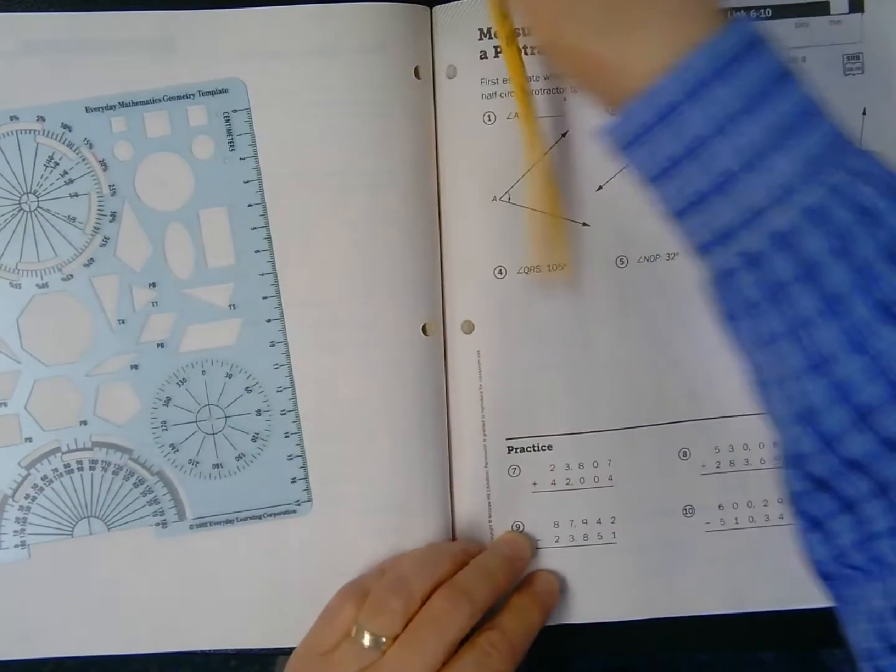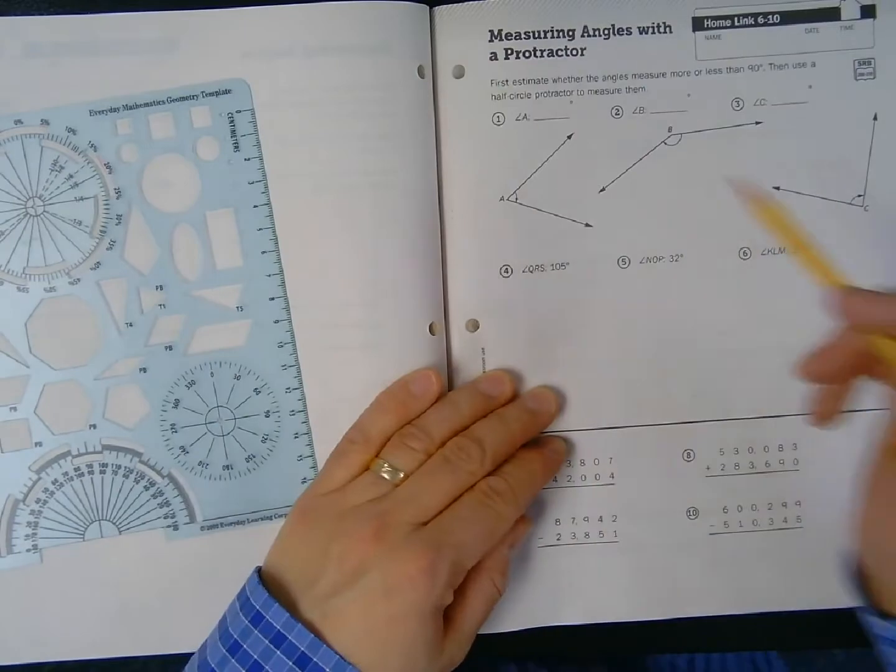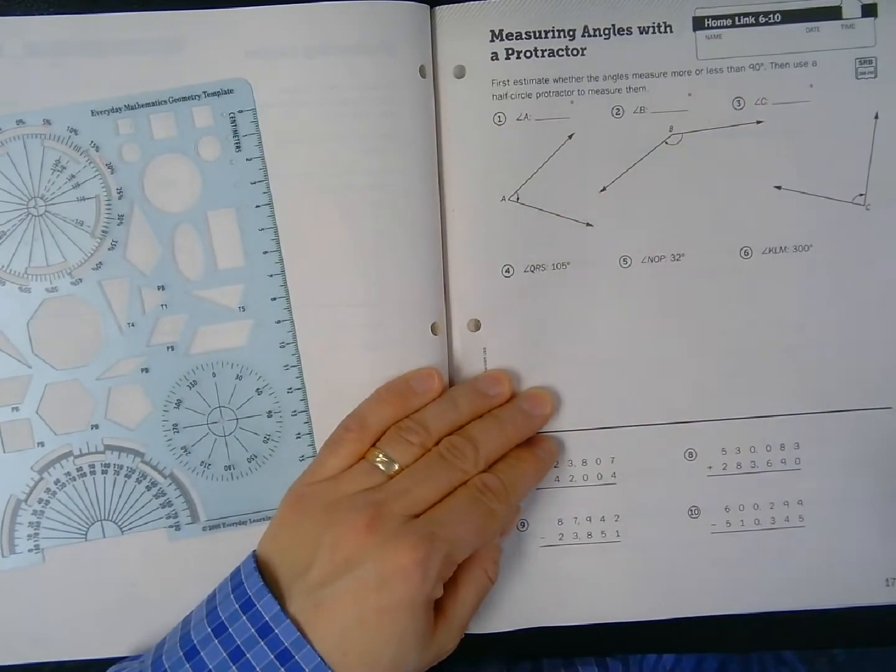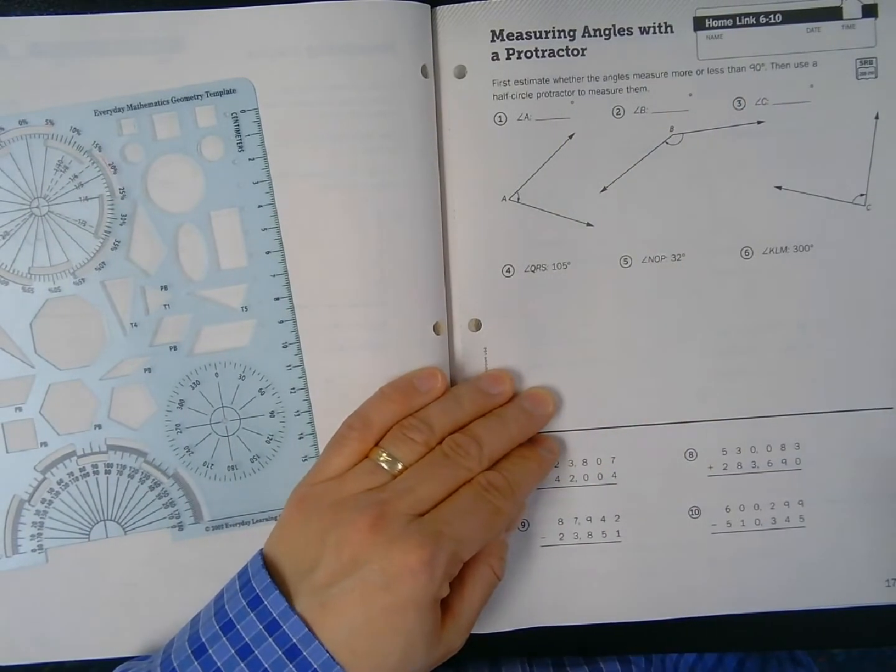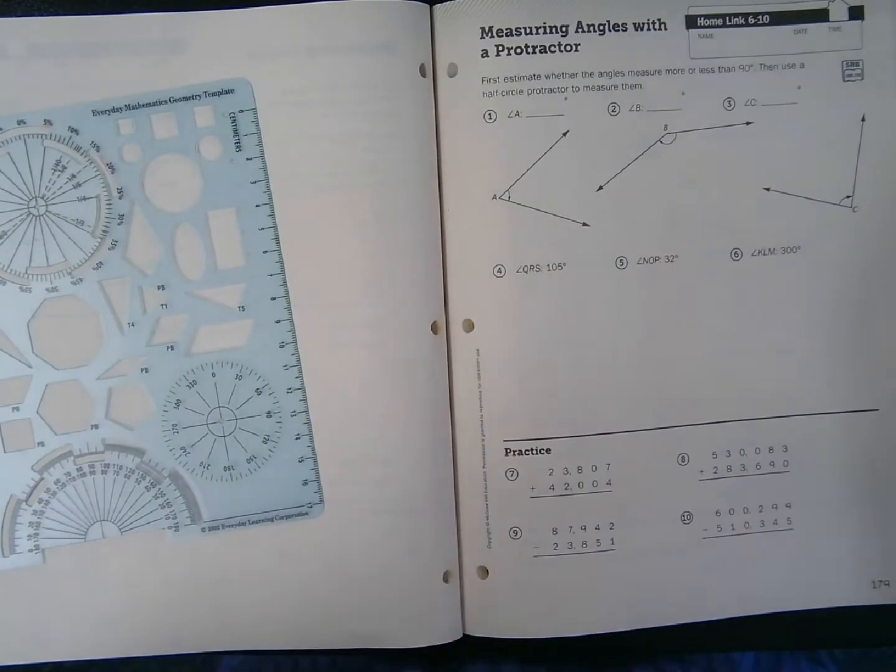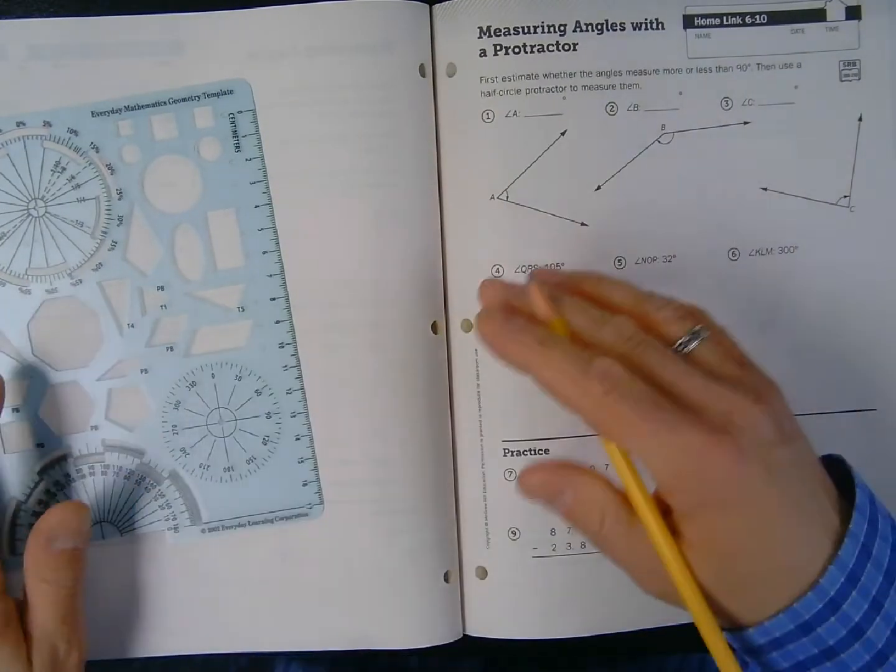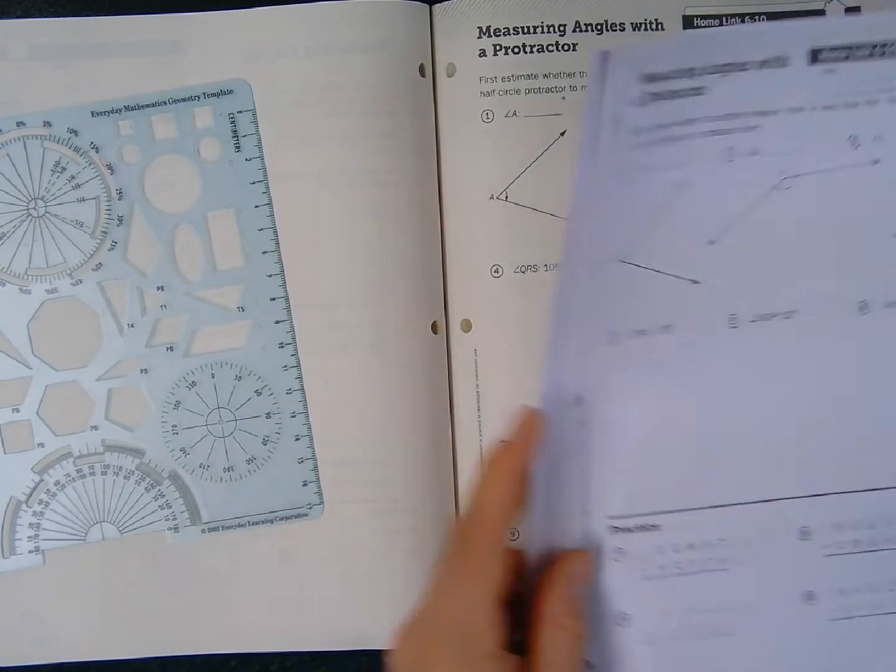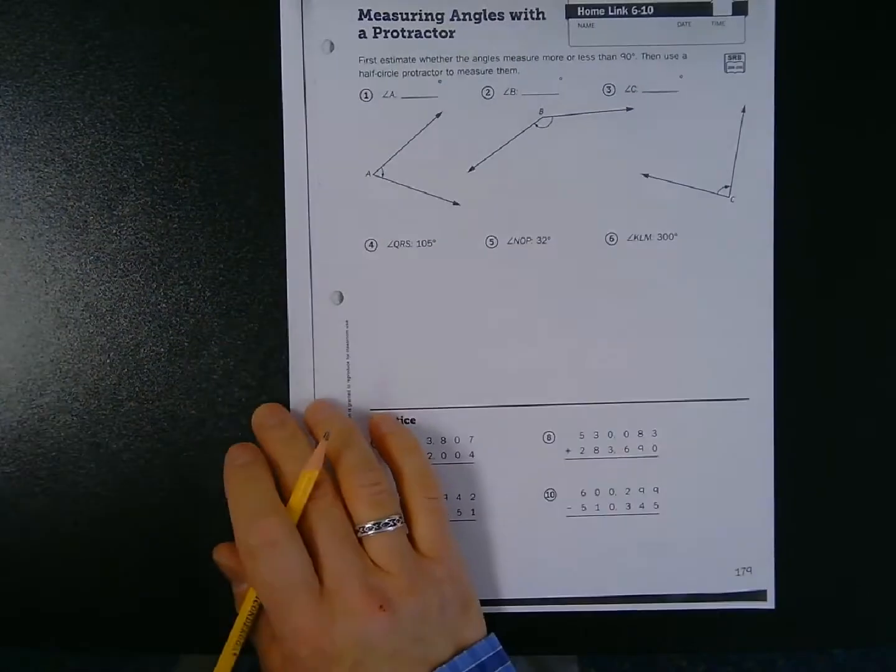So the first three problems here, it says first estimate whether the angles measured are more or less than 90 degrees, then use a half circle protractor to measure them. Now since I'm going to be doing a lot of measuring, I made a photocopy of my page so that it'll be easier to use, and I'll lay flat on my standing desk here.